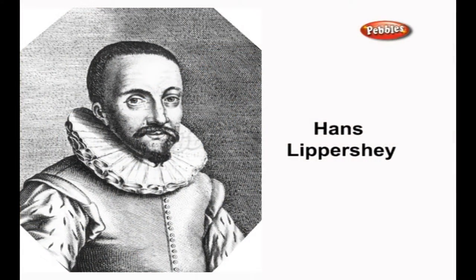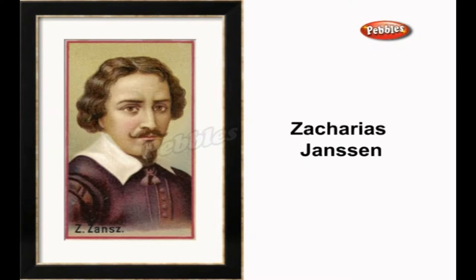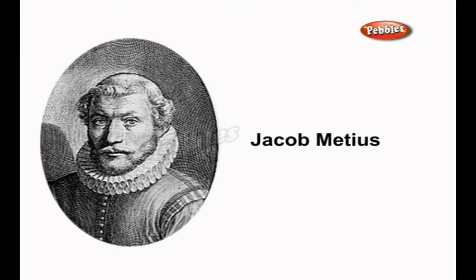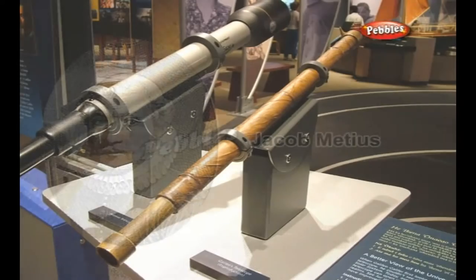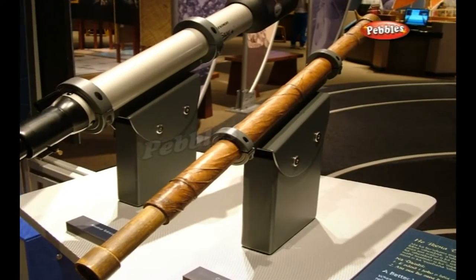Their development is credited to three individuals: Hans Lippershey and Zechariah Janssen, who were spectacle makers in Middelburg, and Jacob Metius of Alkmaar. Galileo greatly improved upon these designs the following year.